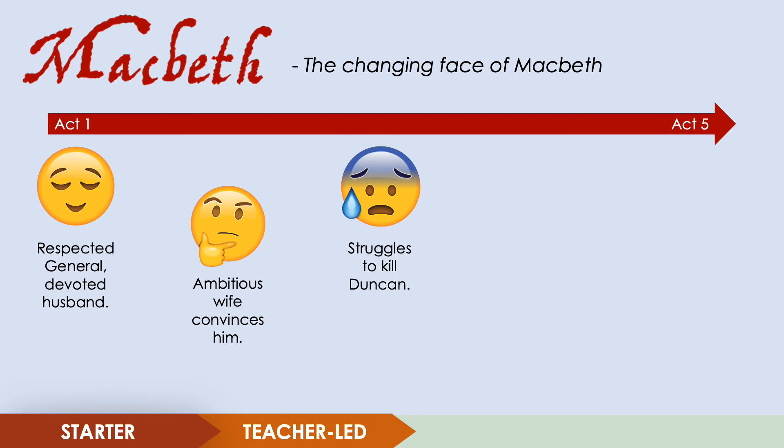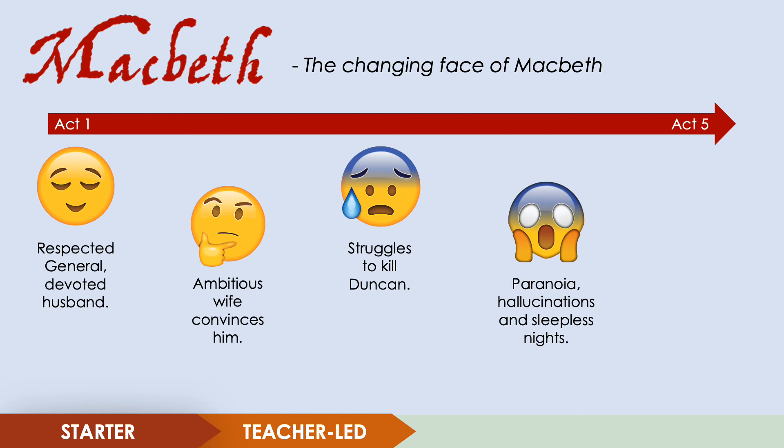We see Macbeth struggling with the idea of killing King Duncan. There is a famous scene where he sees a floating dagger in the air — a hallucination he claims points the way to Duncan's bedchamber. He talks to himself about it and thinks he shouldn't kill the king, but gradually convinces himself it is the right thing to do. After killing the king and becoming king himself, Macbeth's mental state deteriorates: he is plagued with paranoia and guilt, begins to see more hallucinations, and can't sleep.